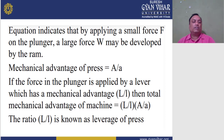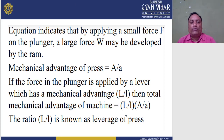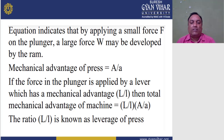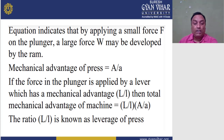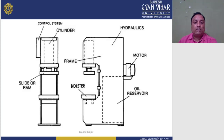If the force on the plunger is applied by a lever which has a mechanical advantage of L/l, then the total mechanical advantage of the machine is (L/l) × (A/a). The ratio L/l is known as the leverage of the press.